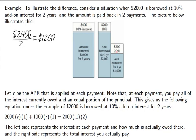To find the APR, we pretend there's a single rate R used on a yearly basis. In the first year: $2,000 times R times 1 year gives the interest paid in year one. Then $1,000 times R times 1 year gives the interest paid in year two. We set the sum equal to the total interest from before: $2,000 times 0.1 times 2, which is $400. Solving for R gives us the true annual percentage rate.